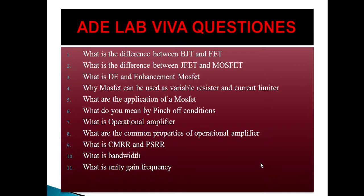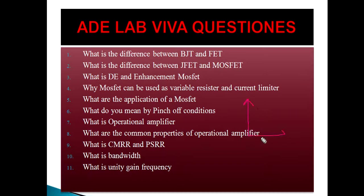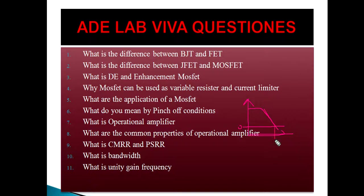At unity gain, suppose we plot gain on the Y-axis and frequency range on the X-axis. Initially gain will be high and then gain will decrease. At unity gain — when the gain is unity, which is zero in decibels — these two lines will cross, and this frequency is called as the unity gain bandwidth frequency.